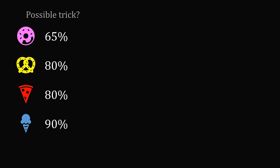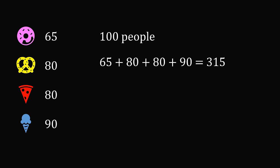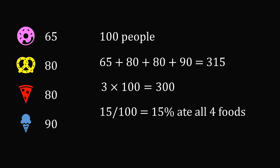Here's a possible trick that makes the calculation very simple. Imagine there are 100 people, so the percentages just become whole numbers. Now let's add up all these numbers: 65 plus 80 plus 80 plus 90, which equals 315. So 315 food items were eaten. Now let's suppose each of the 100 people ate three of these items: 3 times 100 is equal to 300. So we're still 15 food items short. Since each person could have at most four foods, each extra item must correspond to an extra person eating all four. So this means 15 people ate all four foods, and 15 out of 100 is equal to 15%.